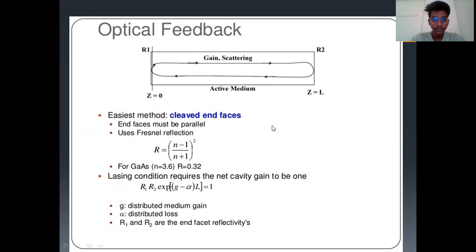Lasing condition requires the net cavity gain to be 1. That is, R1 times R2 times exponential of G minus alpha times L equals 1, where L is the lasing action, alpha is the cavity loss, G is distributed medium gain, alpha is distributed loss, and R1 and R2 are the end face reflectivities.